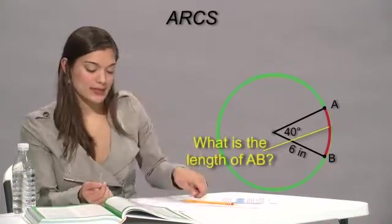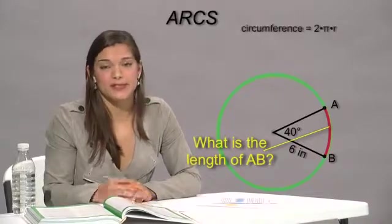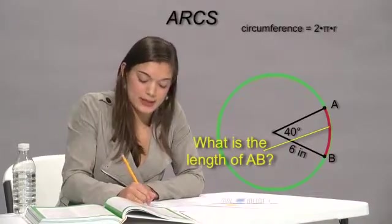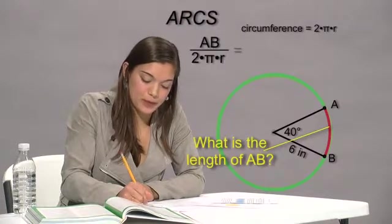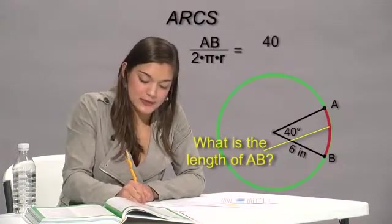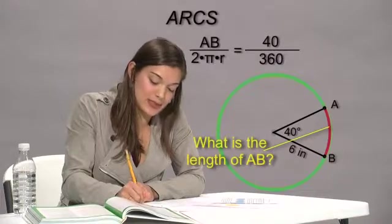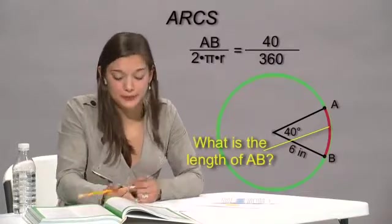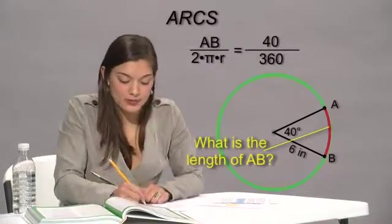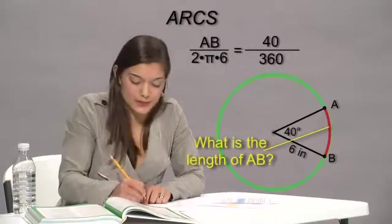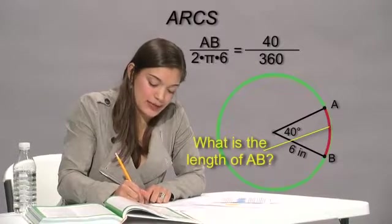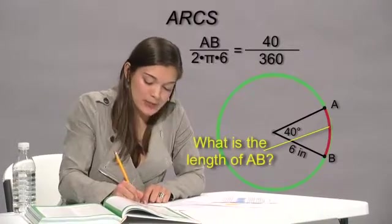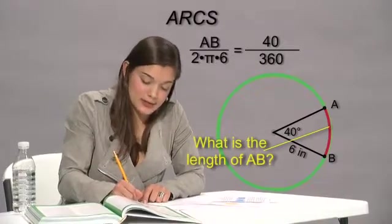So we can set up a ratio because we know the formula for circumference is 2 pi r. So let's say AB over 2 pi r equals 40 degrees over 360 because that's how many degrees are in a whole circle. So we can plug in the radius because we know it's 6 inches. So let's say AB over 2 pi times 6 equals 40 over 360.